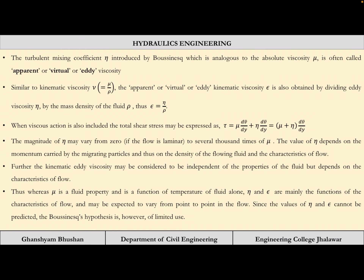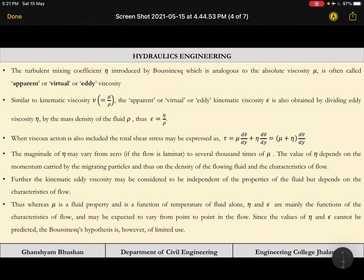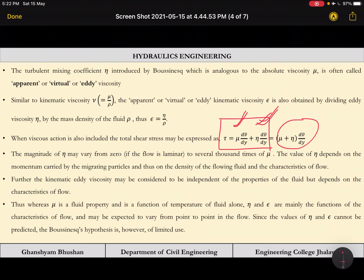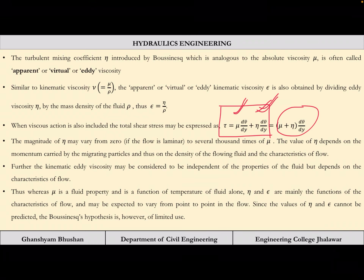When viscous action is also included, the total shear stress is the laminar component plus the turbulent component. Since dv/dy is common, we can write τ = (μ + η) dv/dy. The magnitude of η is very high compared to μ for turbulent flow — for laminar flow η is zero, but for turbulent flow it can be several thousand times greater than μ, so we can easily ignore μ with respect to η.